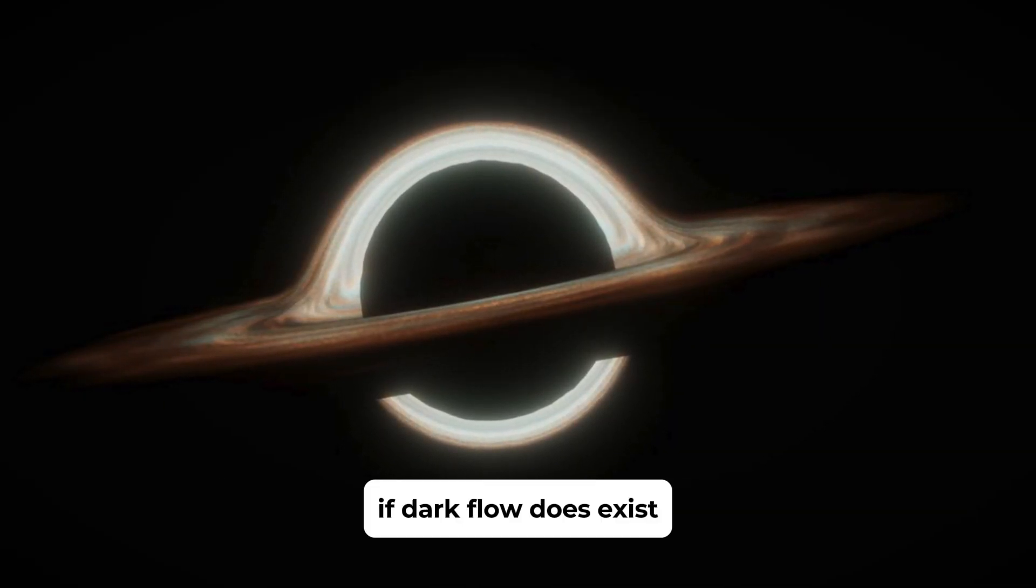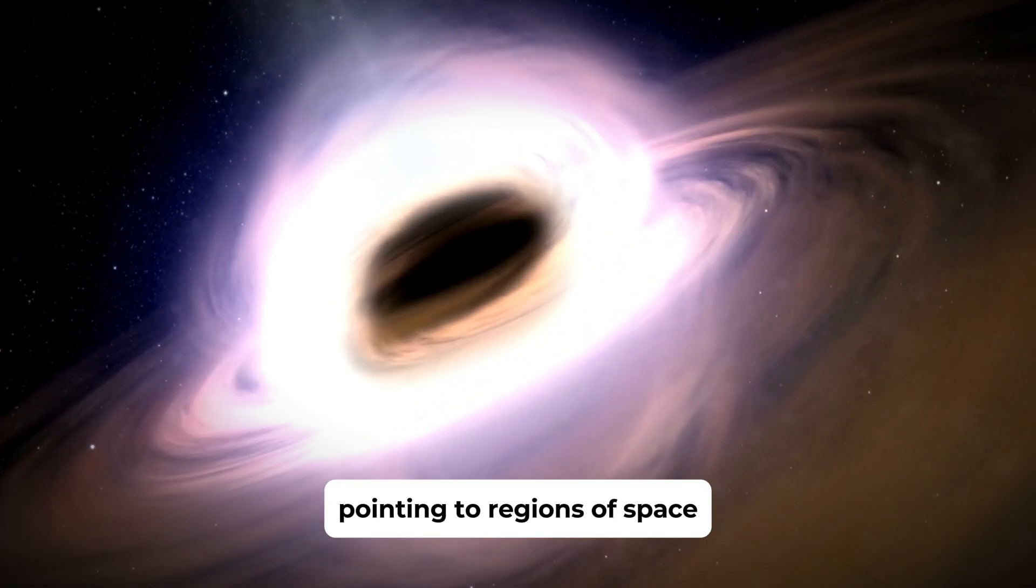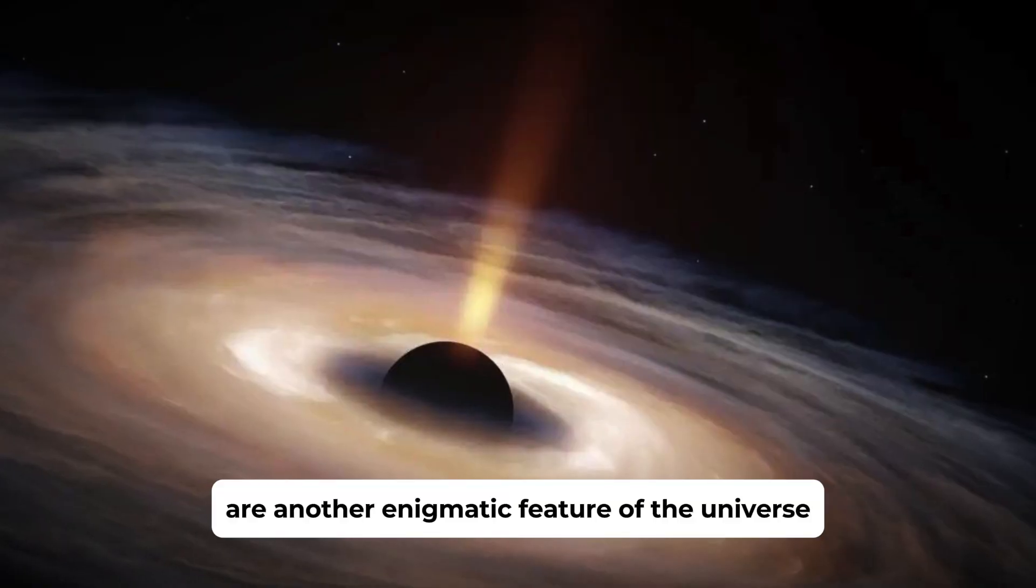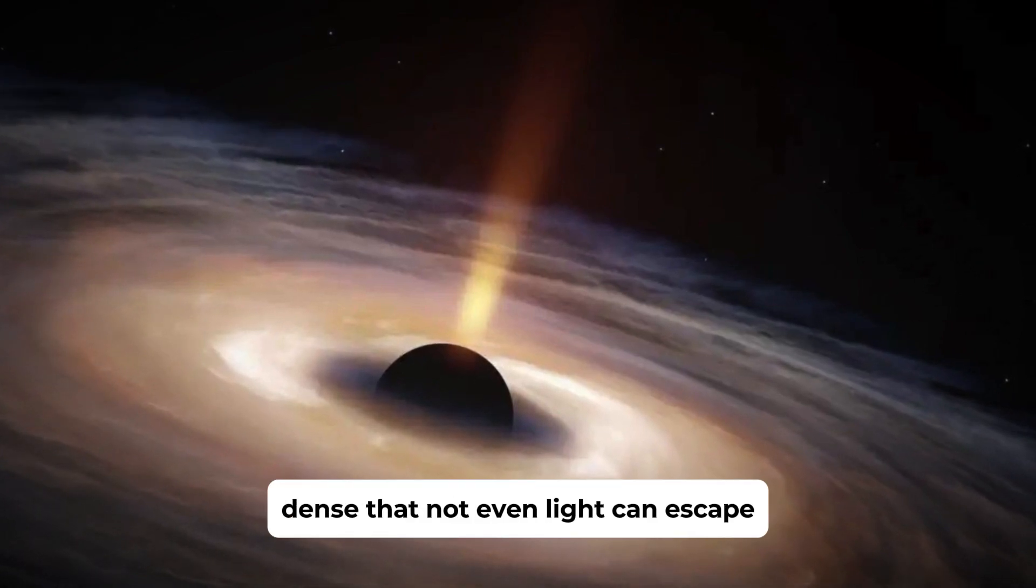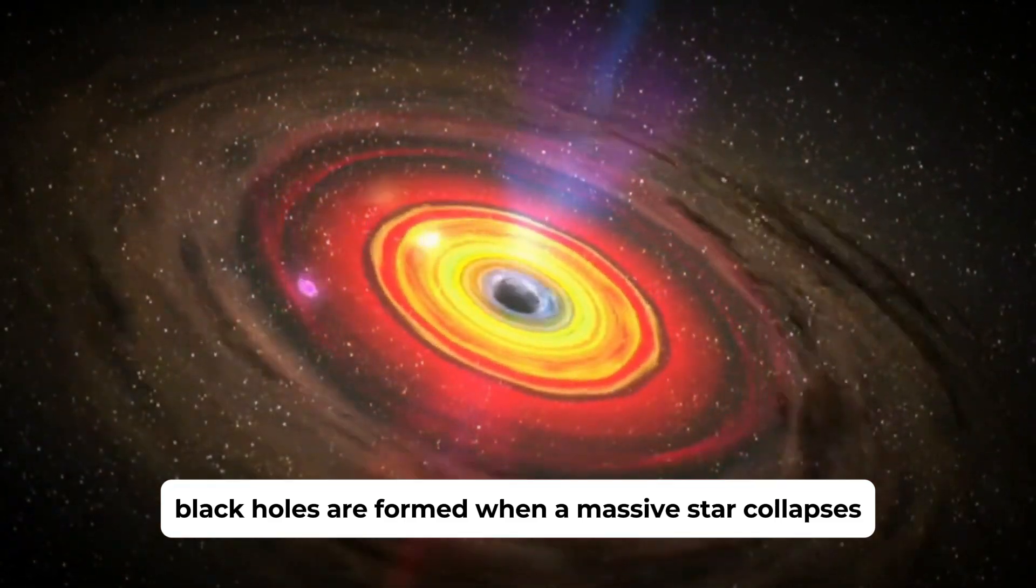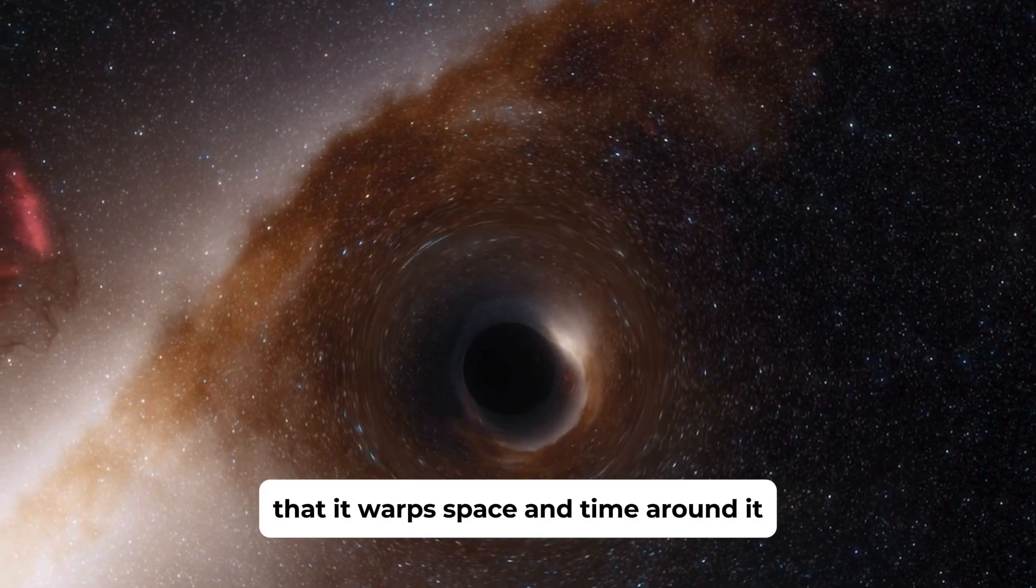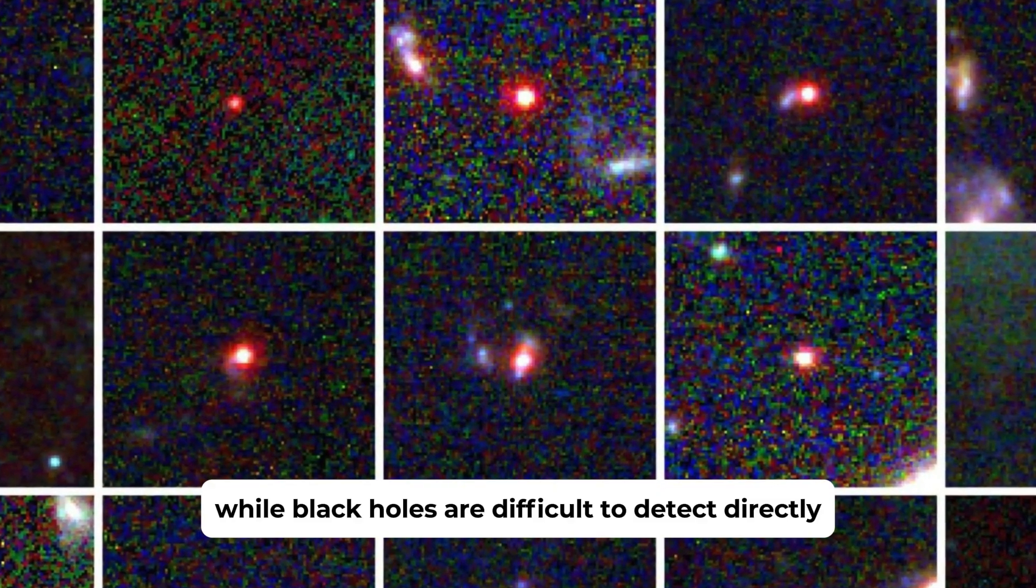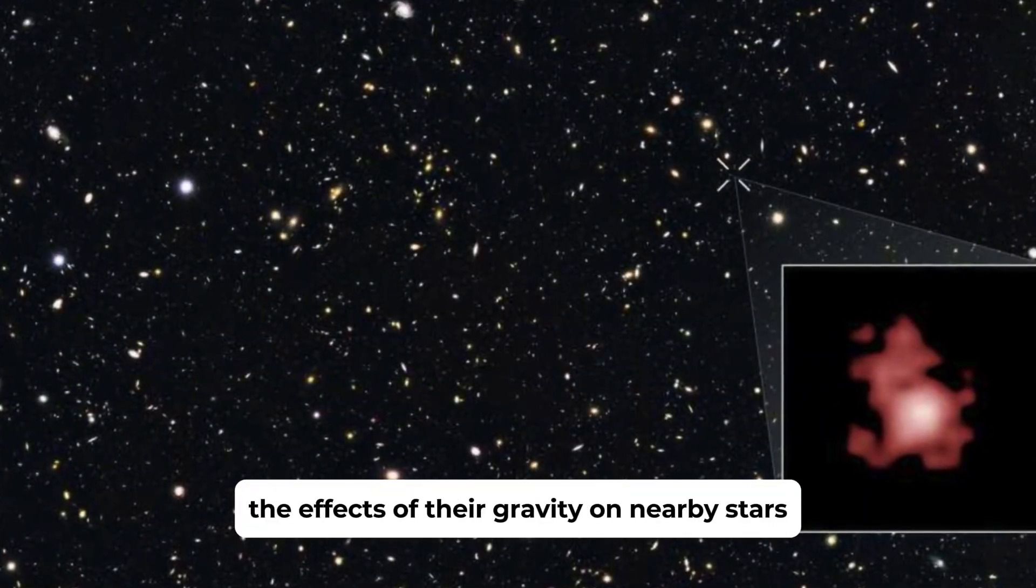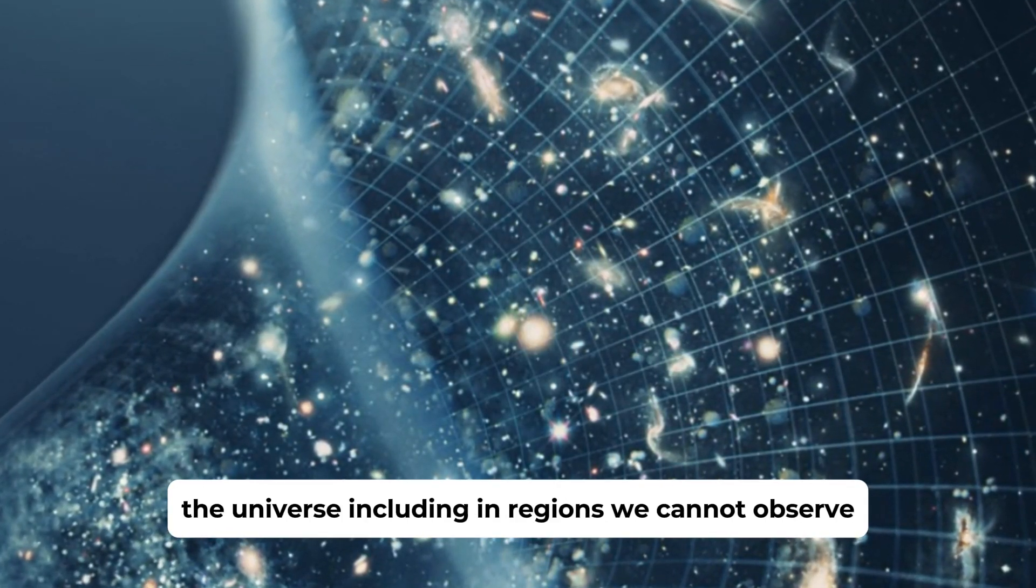If dark flow does exist, it could provide a tantalizing hint of what lies beyond the observable universe, potentially pointing to regions of space that are vastly different from what we know. Black holes are another enigmatic feature of the universe. These regions of space are so dense that not even light can escape their gravitational pull. Black holes are formed when a massive star collapses at the end of its life, creating an object with a gravitational field so strong that it warps space and time around it. While black holes are difficult to detect directly, their presence can be inferred by observing the effects of their gravity on nearby stars and gas. It is likely that black holes exist throughout the universe, including in regions we cannot observe.